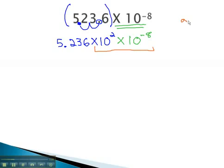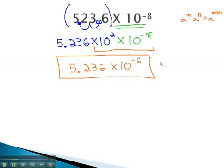We will now use our exponent properties to combine the tens together. Our exponent properties say that if we have a to the m times a to the n, we simply add the exponents together. We will add the exponents on the tens to get 5.236 times 10 to the 2 and negative 8, which gives us negative 6 for our correct answer in scientific notation.